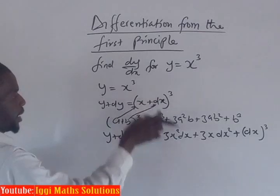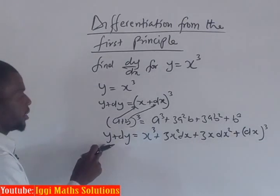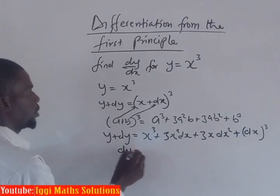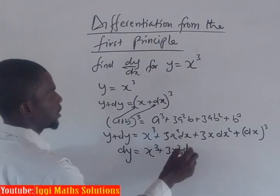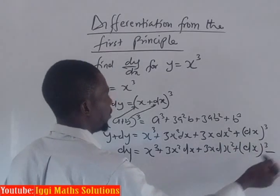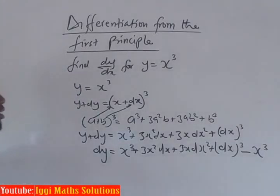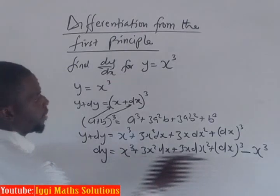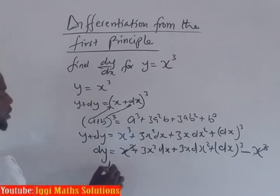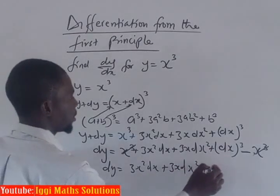We are going to subtract y from both sides. So dy equals x cubed plus 3x squared dx plus 3x dx squared plus dx cubed minus y. Since y equals x cubed, the x cubed terms cancel. Therefore, dy is equal to 3x squared dx plus 3x dx squared plus dx cubed.